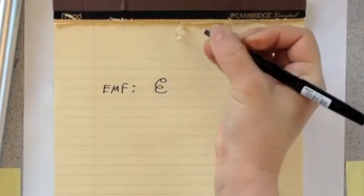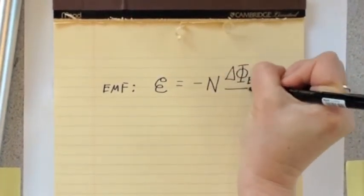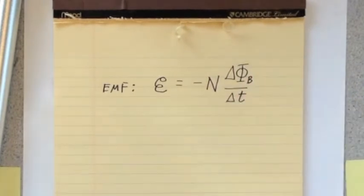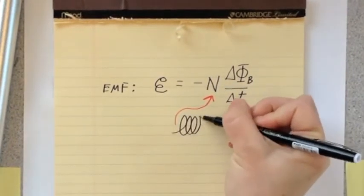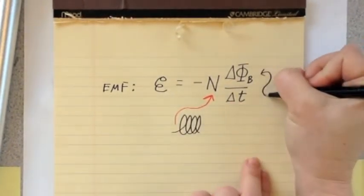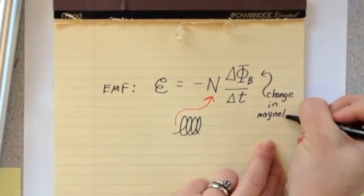To be specific, Faraday's law says that the emf induced in the coil is equal to minus N times delta phi B over delta t, where N is the number of coils in the loop and delta phi B is the amount the magnetic flux changes in time delta t.